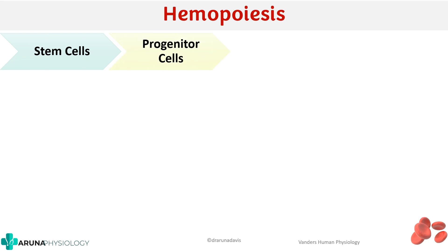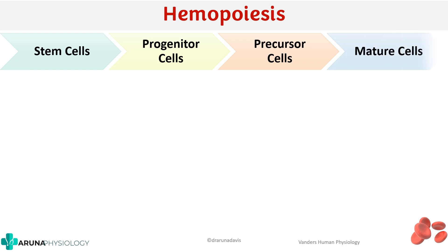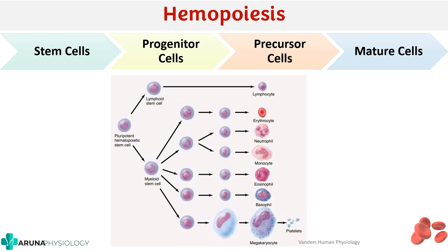Initially you have the pluripotent stem cell, which differentiates to form the myeloid and the lymphoid stem cell. From the lymphoid stem cells we get lymphocytes, and from the myeloid stem cell we get all other groups of cells in the blood. After the myeloid stem cell, you get progenitor cells, which are committed to produce a specific cell line. These progenitor cells further differentiate to form precursor cells, which finally form the mature cell. So remember: stem cell → progenitor cell → precursor cell → mature cell for all cell lines.